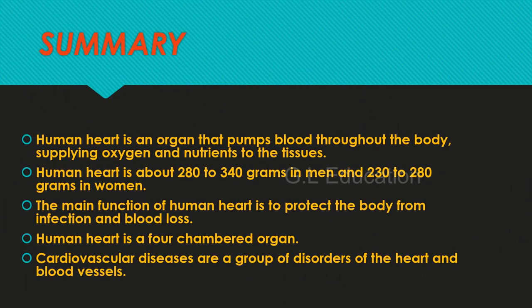Summary: the human heart is an organ that pumps blood throughout the body, supplying oxygen and nutrients to the tissues. It weighs about 280 to 340 grams in men and 230 to 280 grams in women. The main function of the human heart is to protect the body from infection and blood loss. The human heart is a four-chambered organ.